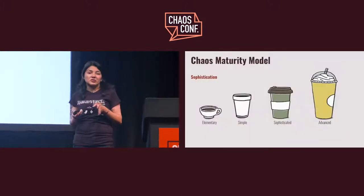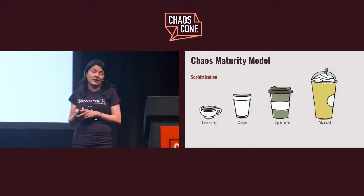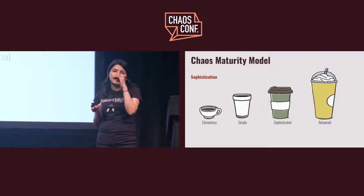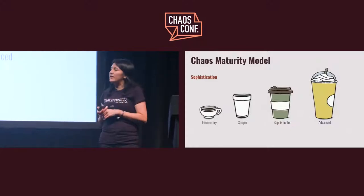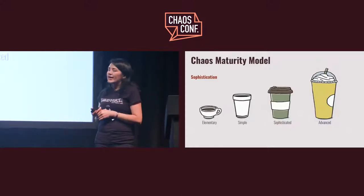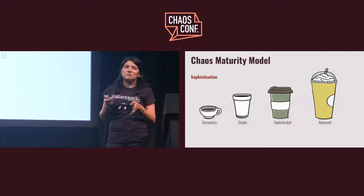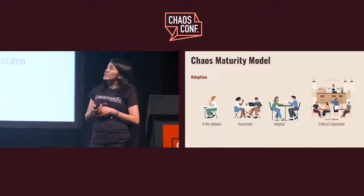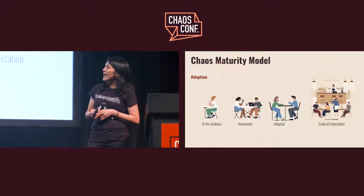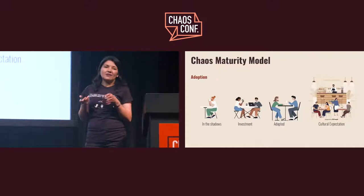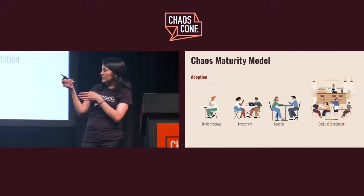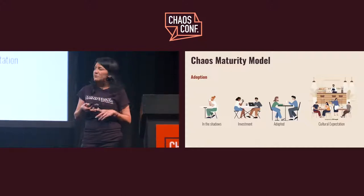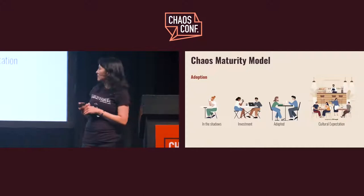The Chaos Maturity Model has two metrics: Sophistication and Adoption. A recipe is elementary if the experiments are running manually and don't run in production. When the experiments have methods and processes fully automated, it is classified as advanced. Something similar happens with adoption — when there are a few systems covered with Chaos Engineering, we are at an individual level. As you progress involving people, sponsors, and processes, the recipe reaches a cultural expectation level.